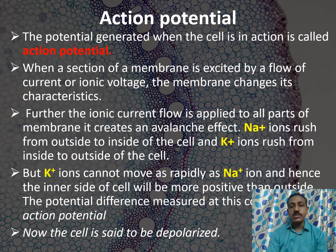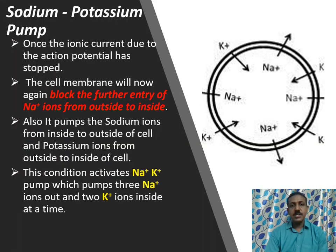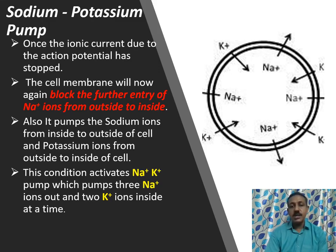The potential difference measured at this moment is called action potential, and at this stage the cell is said to be depolarized. Once the action potential occurs, the sodium-potassium pump will operate. Once the ionic current due to the action potential has stopped, the cell membrane blocks the further entry of Na⁺ ions from outside to inside and blocks the further movement of K⁺ ions from inside to outside. It then pumps sodium ions from inside to outside and potassium ions from outside to inside — specifically, three Na⁺ ions to outside and two K⁺ ions to inside.